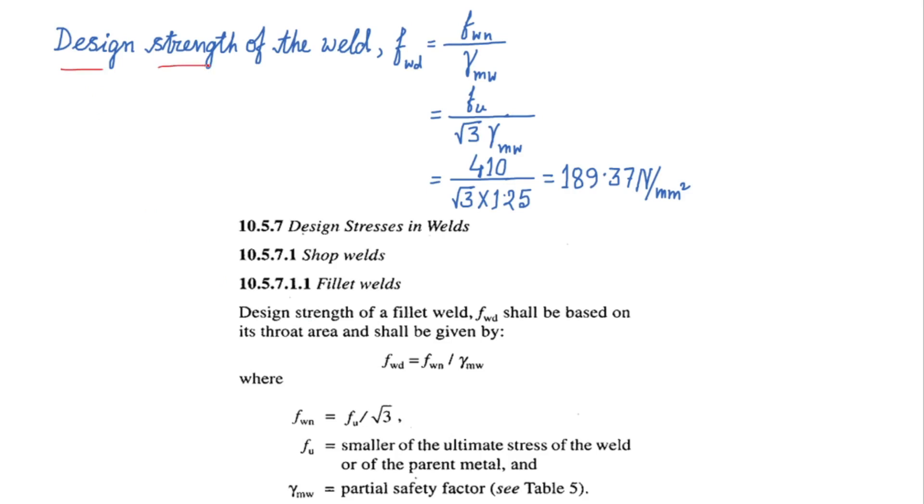Next I shall calculate the design strength of the weld which is denoted by fwd. If I follow the clause number 10.5.7.1.1 of IS 800-2007, this is given only for the fillet welds but you remember the formula is valid for all the types of weld which gives us the design strength of the weld.